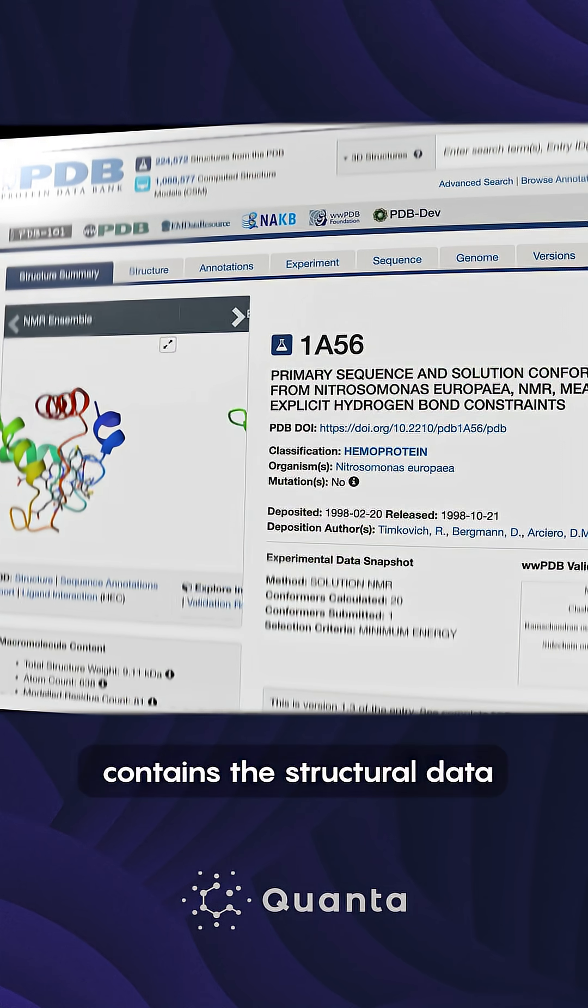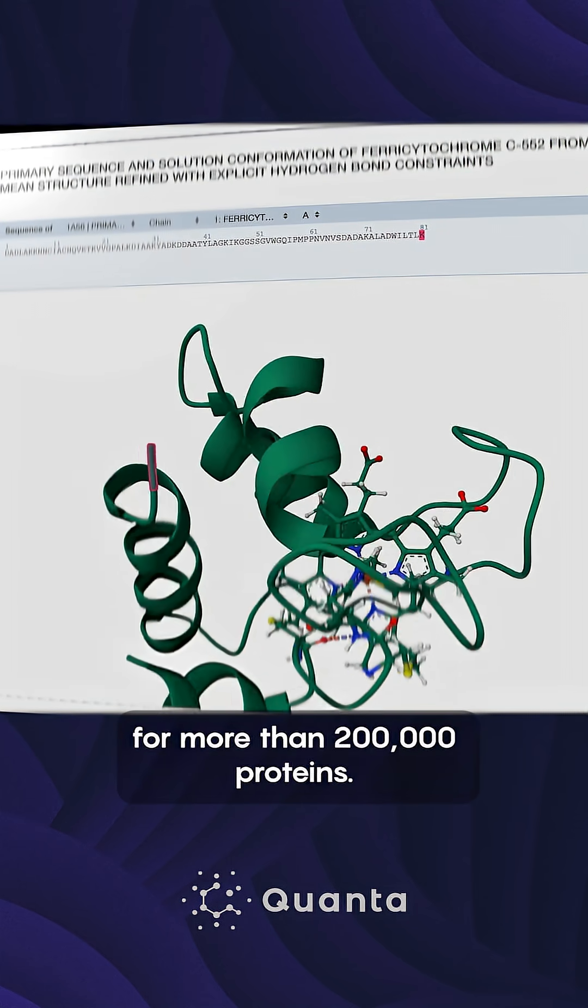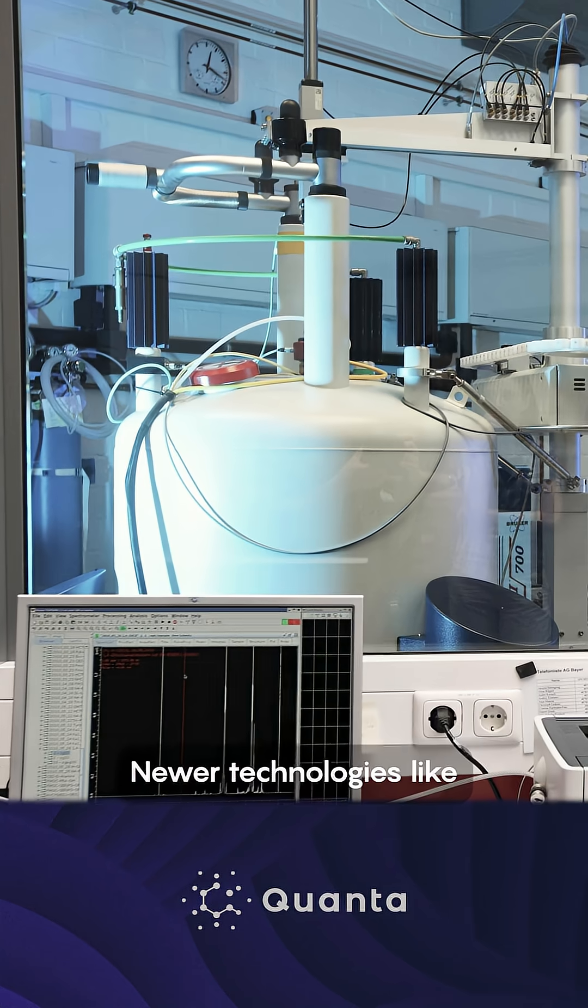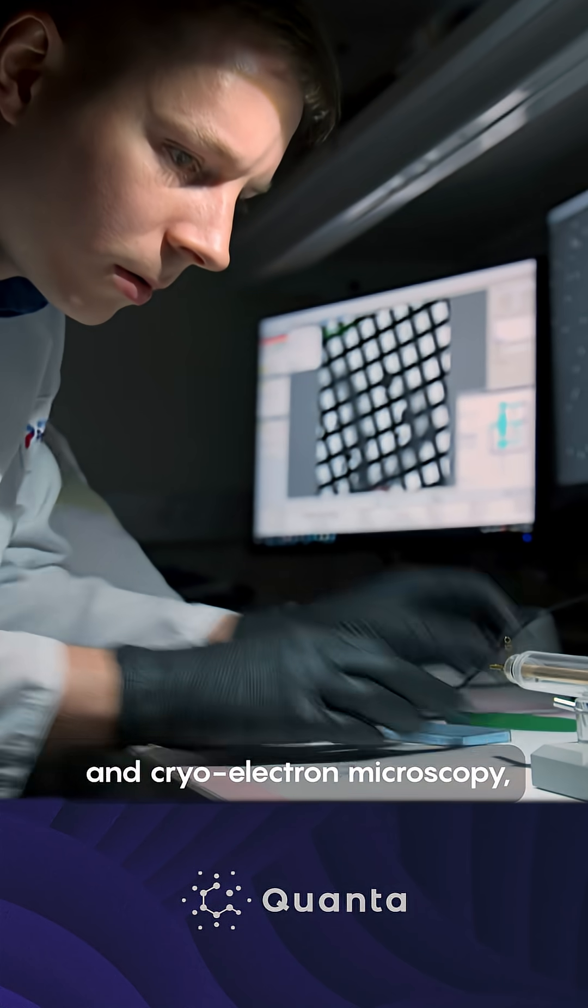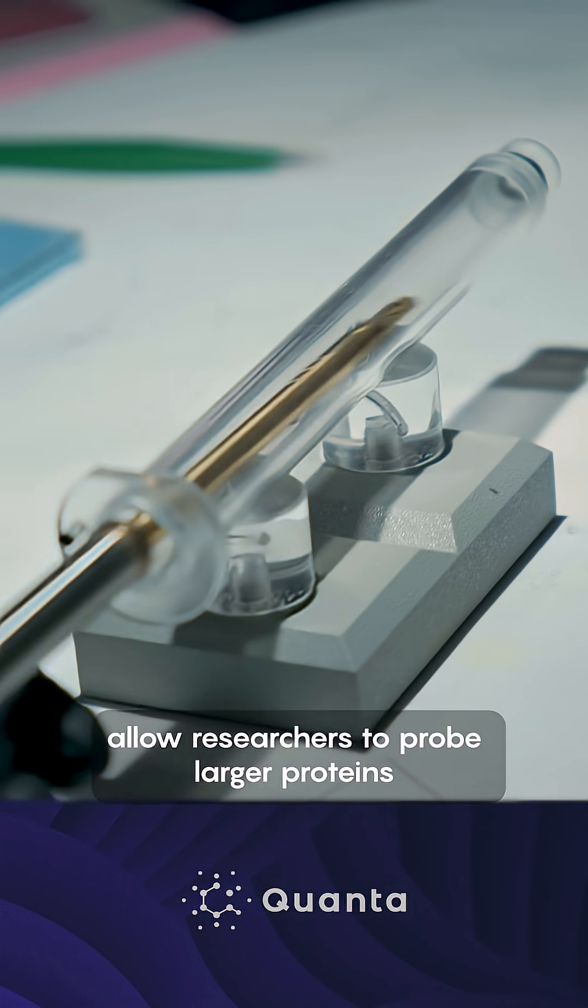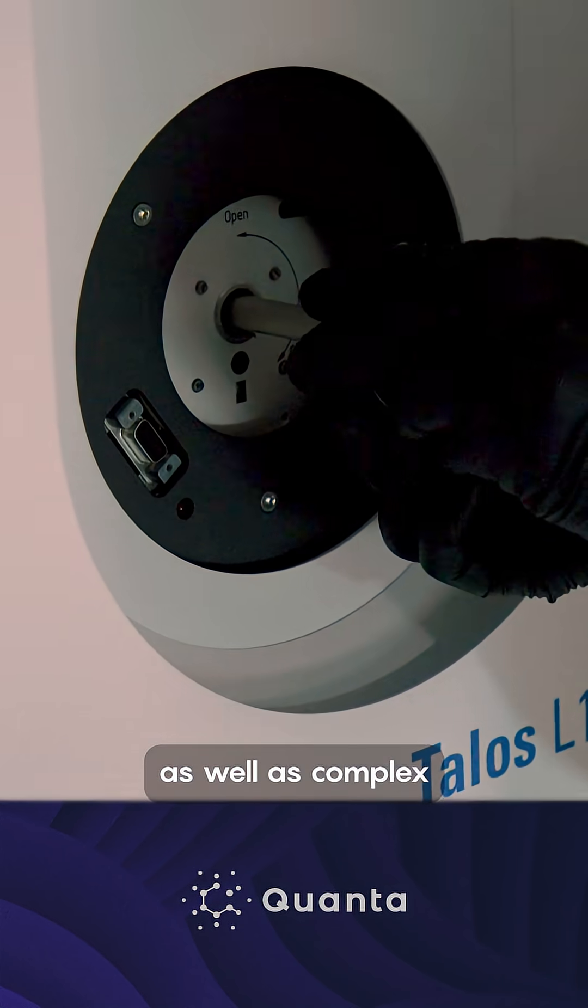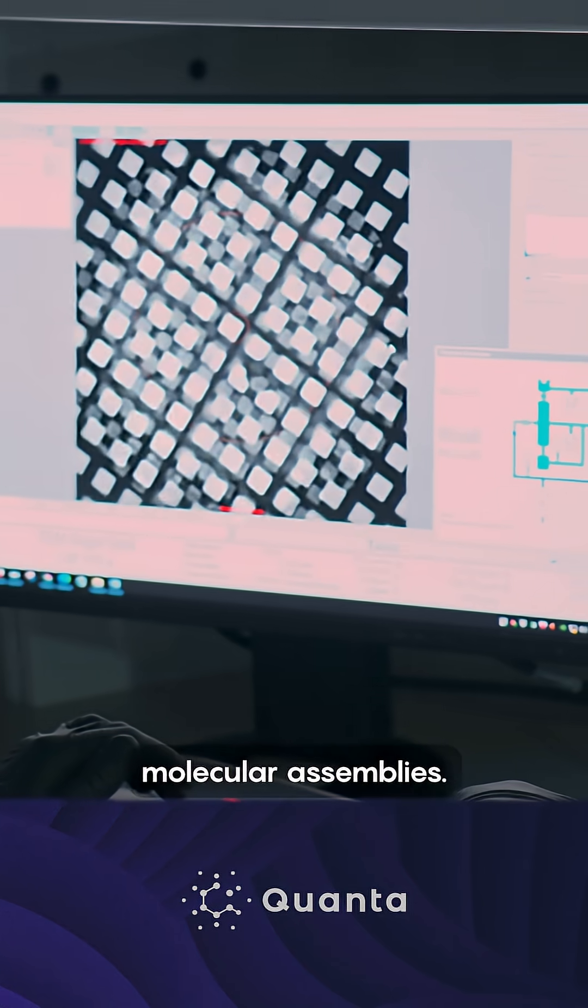Today, the PDB contains the structural data for more than 200,000 proteins. Newer technologies like nuclear magnetic resonance and cryo-electron microscopy, or cryo-EM, allow researchers to probe larger proteins as well as complex molecular assemblies.